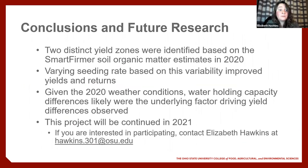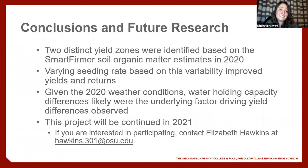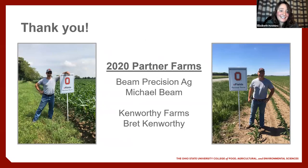To summarize: SmartFirmer data worked well to identify two distinct yield zones in the non-irrigated field, and using those zones for a variable rate prescription increased returns. We believe differences in water holding capacity due to organic matter content were a driving factor in the success of this approach for 2020. We're excited to continue this work in 2021 — if you're interested in participating, please get in touch. Thank you to my partner farms: Michael Beam at Beam Precision Ag and Brett Kenworthy at Kenworthy Farms.